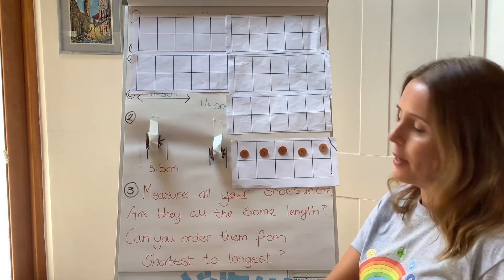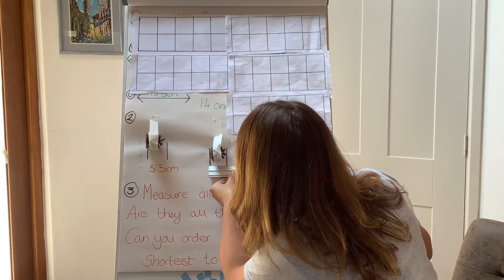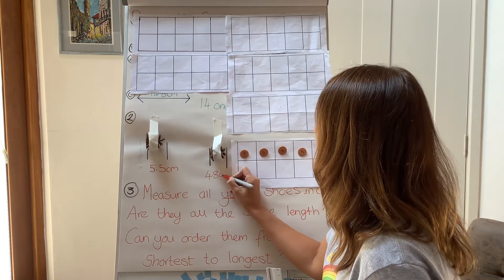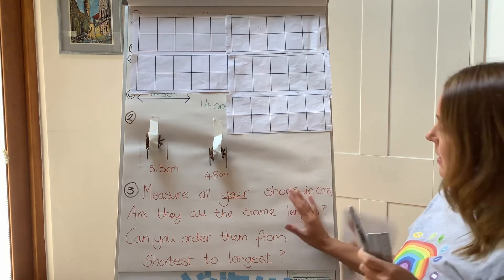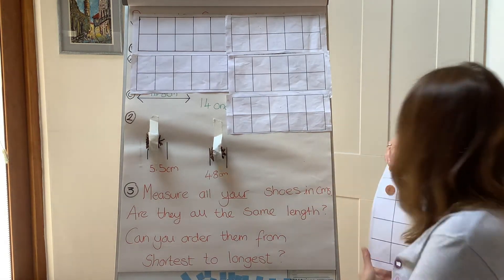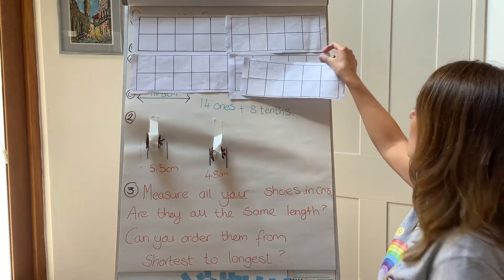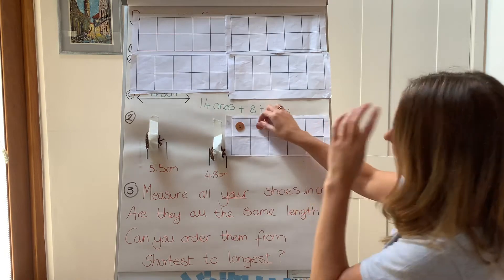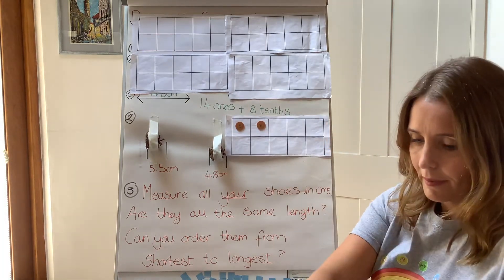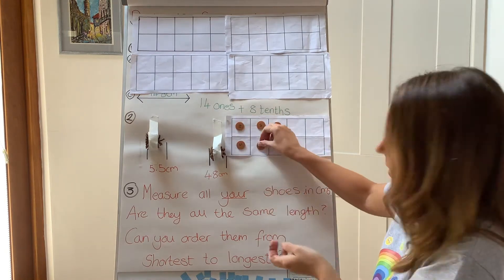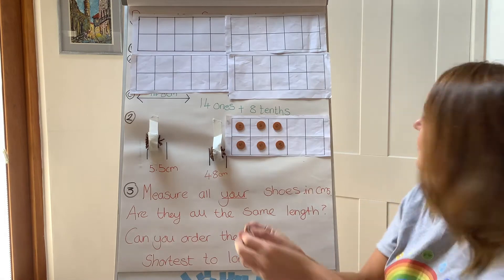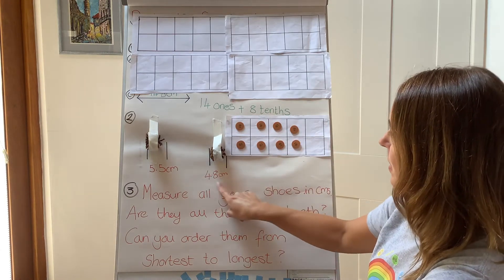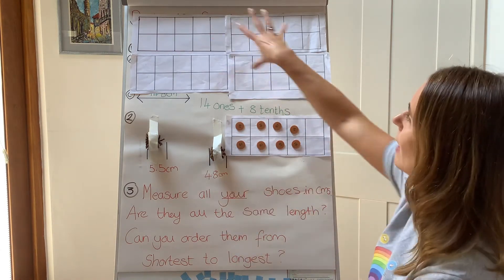The second one — let's give that one a measure. This one is exactly 4.8 centimetres. It's shorter. So we've got four whole ones and 0.8 — eight tenths as well. Although we've got more tenths in this one, this number is smaller — it's shorter in length because we've got fewer whole ones.